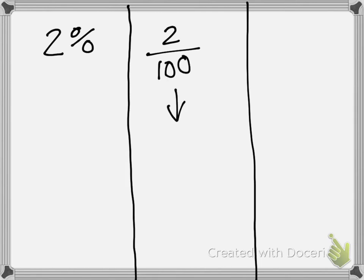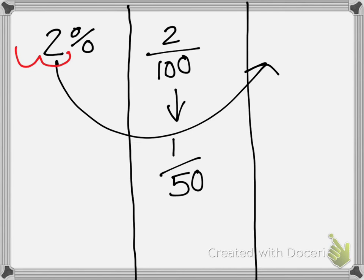Once again, we have to simplify and we get 1 over 50. We divide by a common factor, the greatest common factor in this case. So once again, we can do it either of the two ways. 2%, we move our decimal over, 1, 2. So it becomes 0.02.